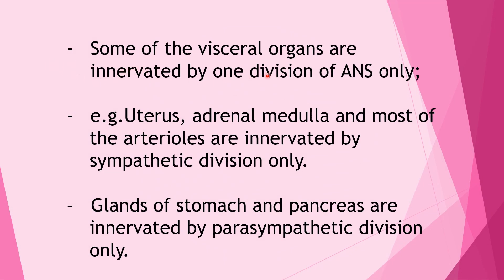Some visceral organs are innervated by only one division of the autonomic nervous system. For example, the uterus, adrenal medulla, and most arterioles are innervated by the sympathetic division only, while the glands of the stomach and pancreas are innervated by the parasympathetic division only.